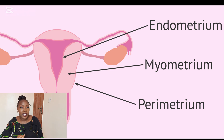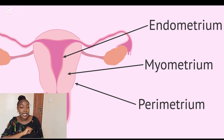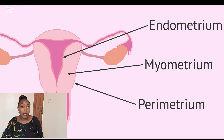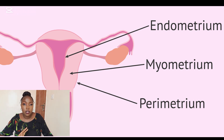Next, we have the uterus or the womb. The uterus is a pear-shaped hollow organ with three major layers. The innermost layer is called the endometrium — this is the layer where implantation happens and which also nourishes the fetus. The endometrium sheds during menstruation.